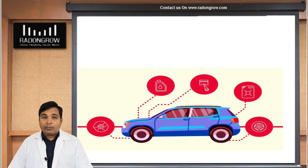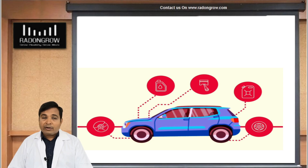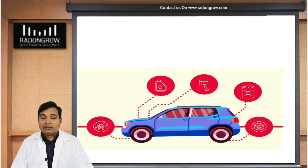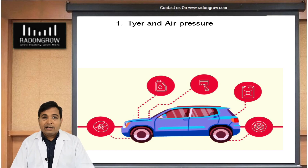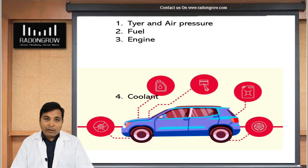First we will learn about the plant, how a plant works, and what are the requirements of a plant to complete its life cycle. If you want to run a car, we need at least five to six parameters. We are discussing here approximately five parameters. If you want to run a car, you need a tire with proper air pressure.